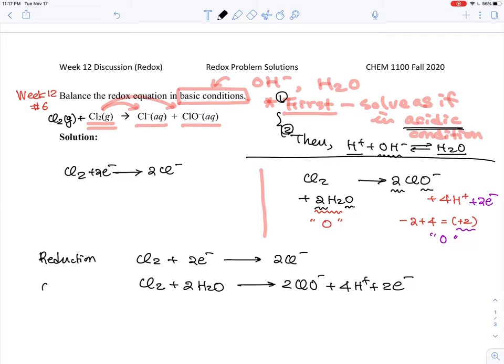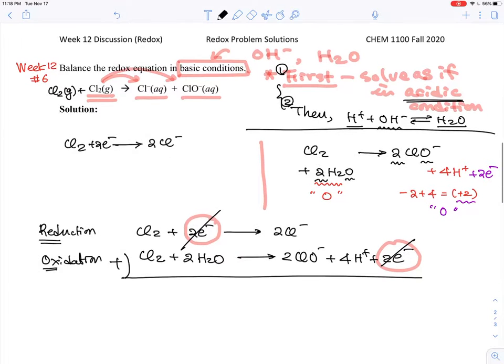Now let's have a look at this. The number of electrons: two electrons, two electrons. I think we are lucky here. I don't need to multiply anything to make the matching number of electrons on the left hand side and right hand side.